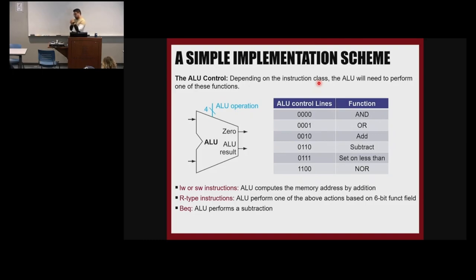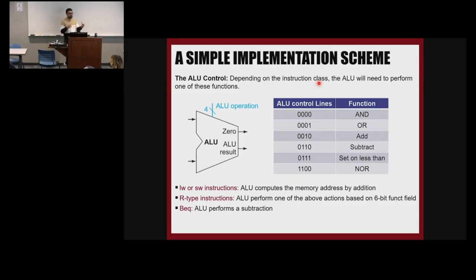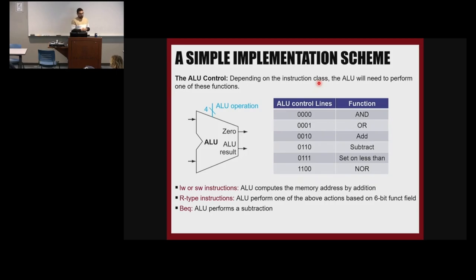Now we know the different parts of the processor, and our plan is to build the MIPS processor — a very simple data path. One of the most important things to know about this data path is how the ALU works. We support these ALU operations in this simple architecture: AND, OR, ADD, SUBTRACT, SET-LESS-THAN, and NOR.